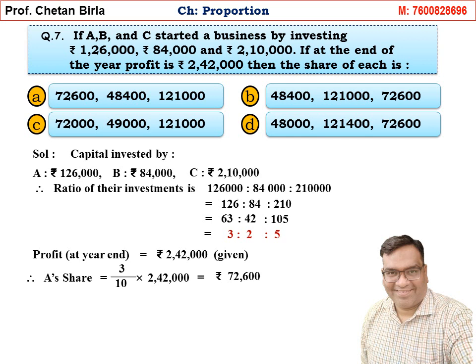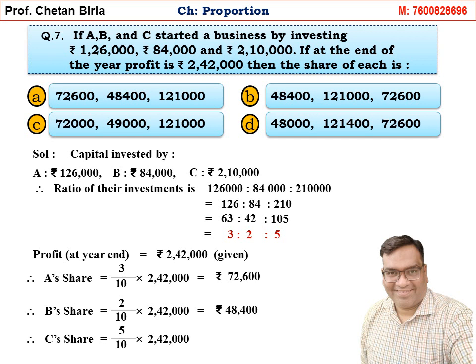For further verification: B's share = (2/10) × 2,42,000 = Rs. 48,400. C's share = (5/10) × 2,42,000 = Rs. 1,21,000. All three match Option A values, so Option A is confirmed as the correct answer.